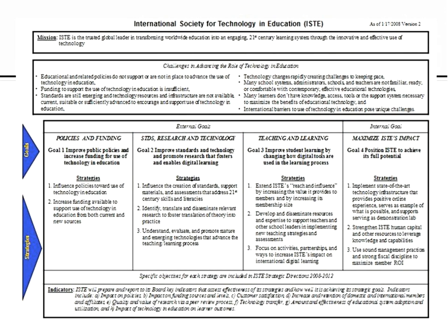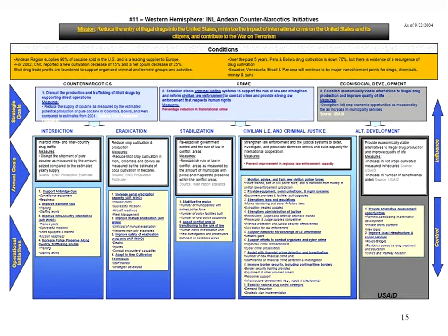This next example is not quite as colorful but adds the same kind of information. The International Society for Technology and Education had a mission, was facing a number of challenges, identified key goals it wanted to achieve and the strategies for doing so, and at the bottom included indicators or ways to measure progress as well.